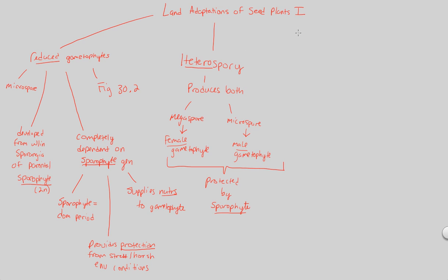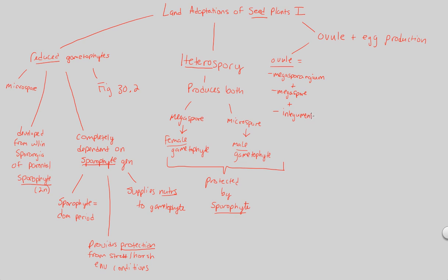The final land adaptation in this flowchart involves ovule and egg production. This is a big part of these land plants because the seed originates from this ovule and egg production. An ovule contains three major parts: a megasporangium, a megaspore that comes from the megasporangium, and integuments. The megasporangium is related to the female gametophyte. These three components — megasporangium, megaspore, and integument — are the key parts to remember.